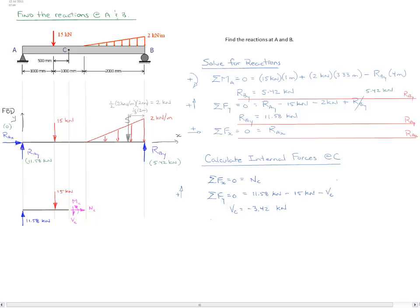We can complete this by doing sum of the moments about point C equal to zero. It doesn't really matter what you choose. And we'll again do clockwise as positive.